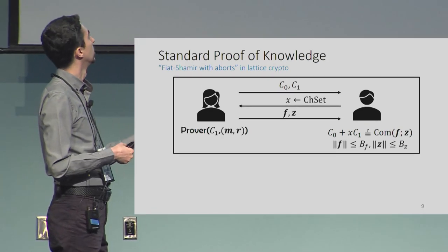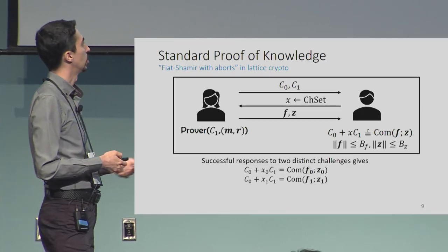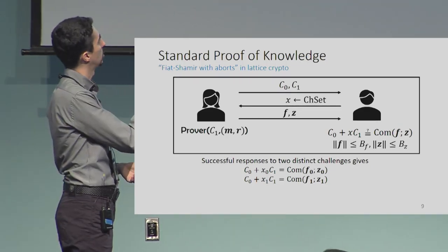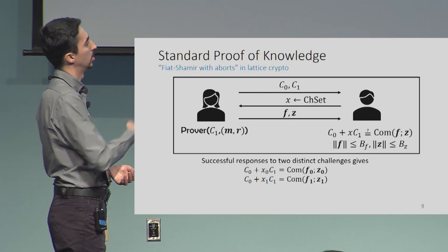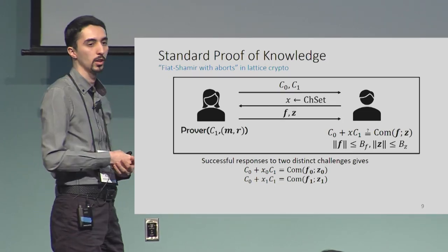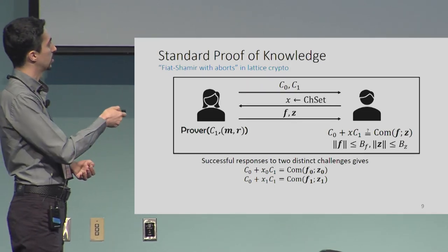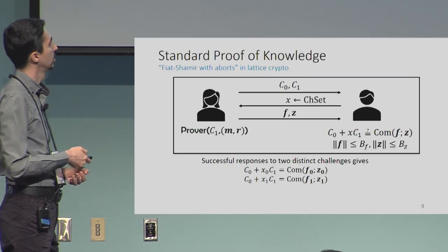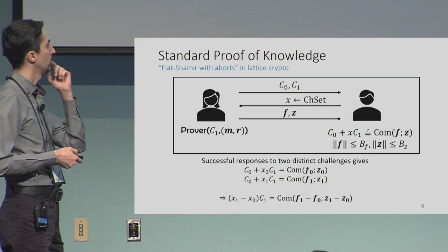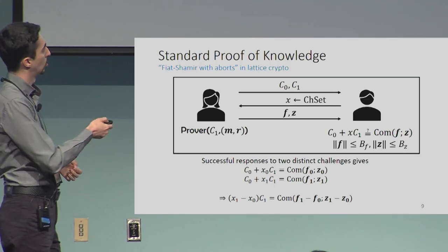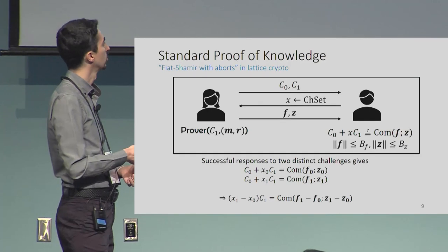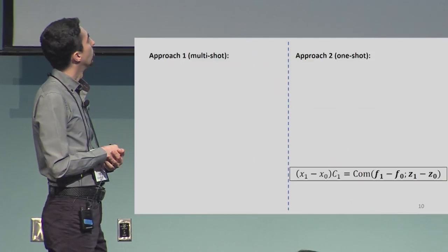To prove special soundness, assume two accepting protocol transcripts sharing the same C0 and C1, but with different challenges X0 and X1. We get two equations satisfied, and subtracting the latter from the former gives a relation. We know this difference is small because we checked that the responses are short vectors.